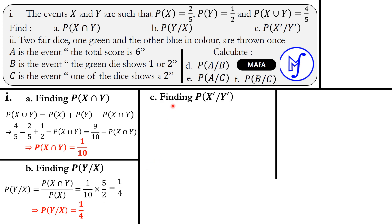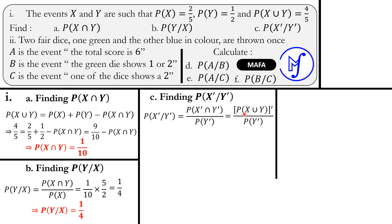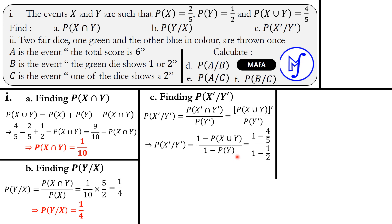Part C asks for P(X'|Y'). Mathematically, P(X'|Y') = P(X'∩Y') / P(Y'). We recall that P(X'∩Y') is the complement of P(X∪Y), equal to 1 − P(X∪Y), and P(Y') = 1 − P(Y). Fitting in the respective values, P(X'|Y') = (1 − 4/5) / (1 − 1/2) = (1/5) / (1/2) = 2/5.